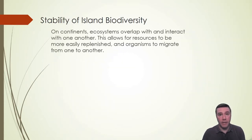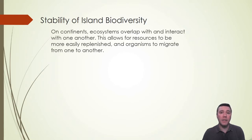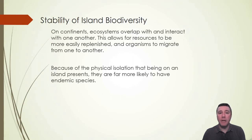On a continental landmass, different kinds of ecosystems often border or even overlap with one another. This means that resources can be replenished and transported more easily from one ecosystem to another, and that organisms can migrate and interact with a variety of ecosystems. On an island, however, the ecosystem generally ends at the water's edge. Islands both suffer and benefit from physical isolation — while a decreased variety of abiotic resources may be present, it also means that islands are more likely to have endemic species.